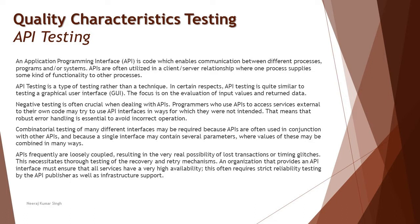Because a single interface may contain several parameters, APIs frequently are loosely coupled, resulting in the real possibility of lost transactions or timing glitches. A timeout is defined for each API, and when the activity does not take place within the timeout provided, it returns a message like 'system timed out' or 'request timeout.' This necessitates thorough testing of recovery and retry mechanisms. An organization providing an API must ensure very high availability, often requiring strict reliability testing by the API publisher.